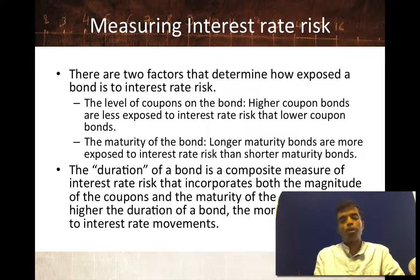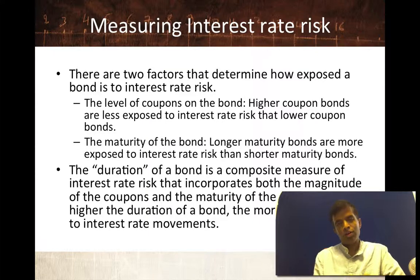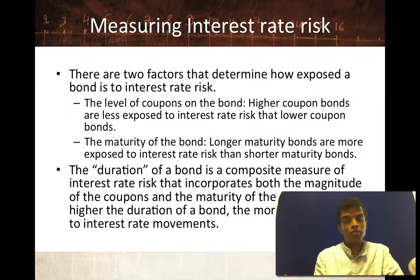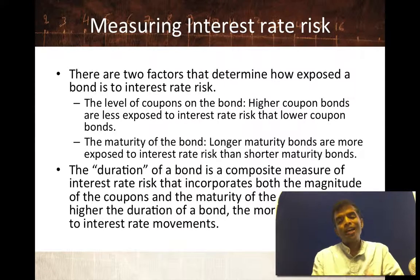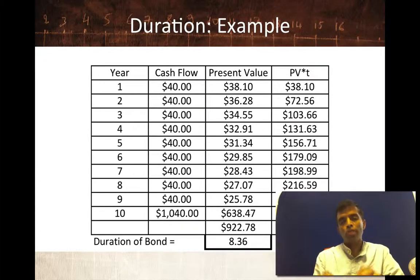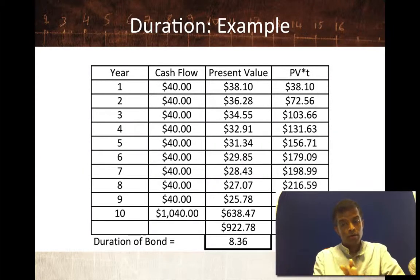Bond buyers often look for a composite measure that captures the interest rate risk of a bond, and that measure is called duration. When you hear the term duration in the context of a bond, it can be read in one of two ways. It's a weighted average maturity of when the cash flows come into the bond. But more interestingly, the duration of a bond is a measure of the interest rate risk in the bond — the higher the duration, the more sensitive it is to changes in interest rates. There are lots of different ways to compute duration. The simplest is called Macaulay duration, and here's how you compute it for the bond we just valued.